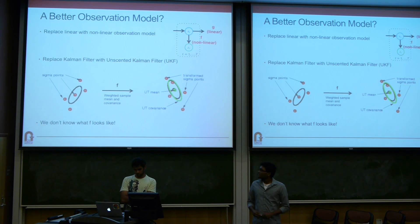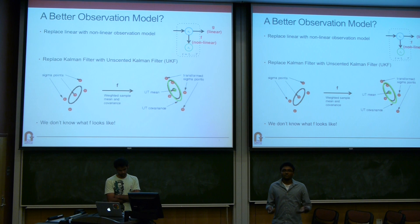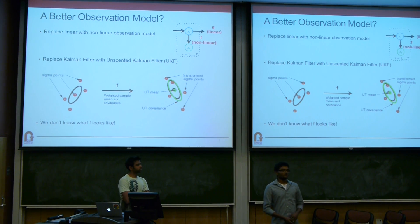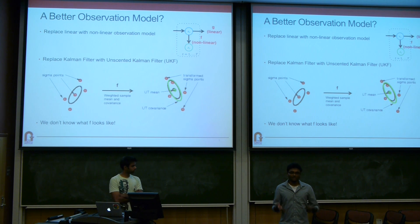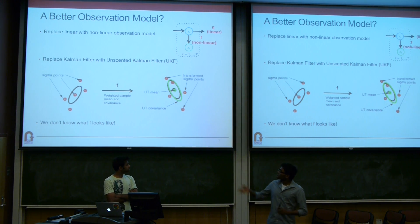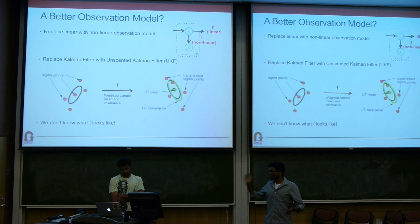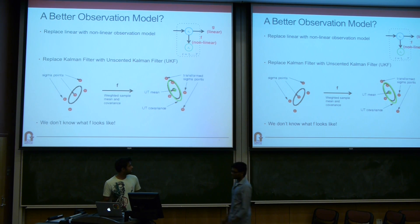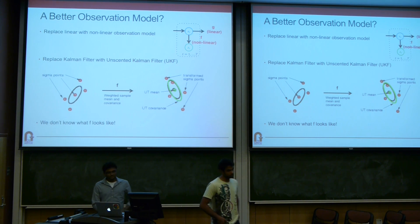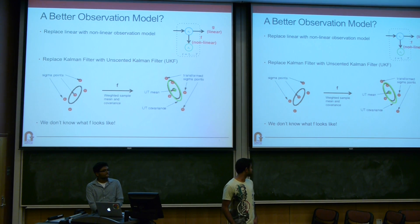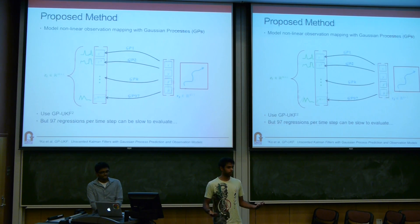Probably not. So we'd like to adjust our observation model to use something that is non-linear. We could improve the Kalman filter and go to the unscented Kalman filter, which doesn't require a linear observation model. But the unscented Kalman filter requires some parametric form — some form of a non-linear function — and we have no idea what f really looks like. So what do we do?